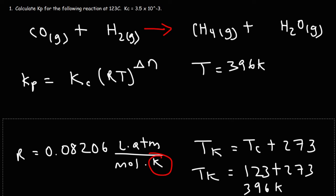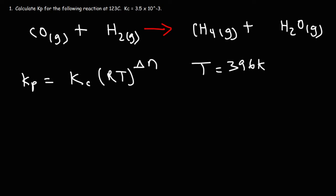Now, you might be wondering, what about delta N? What is delta N? Delta N is the difference between the sum of the coefficients of the products minus the sum of the coefficients of the reactants.